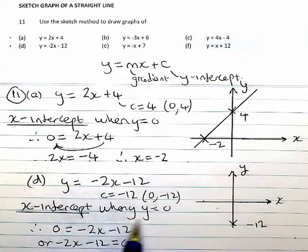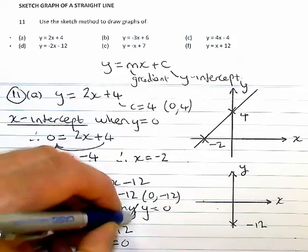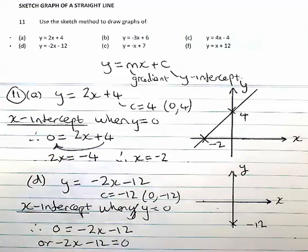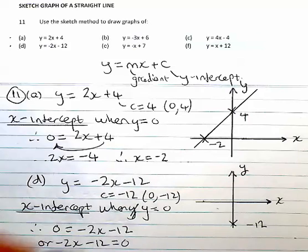And I find the x-intercept when y is equal to 0. Doing the transposing, 0 is equal to -2x - 12. Bring that over there, -2x is equal to 12.